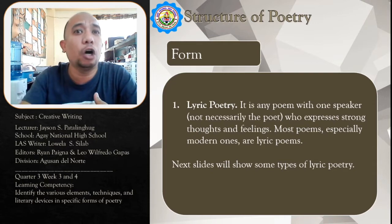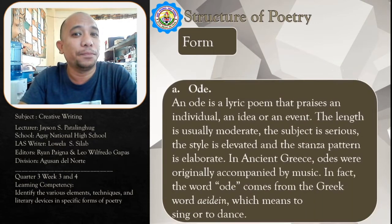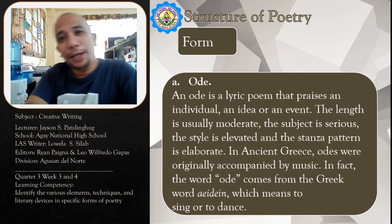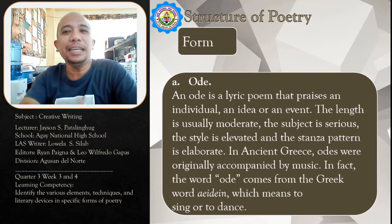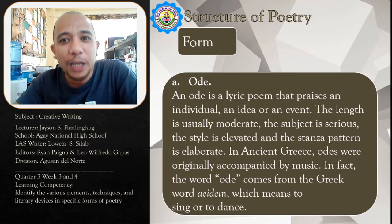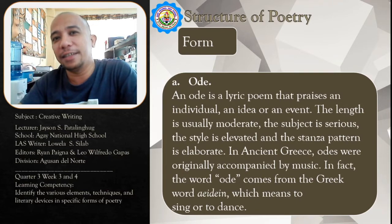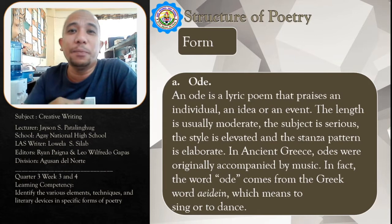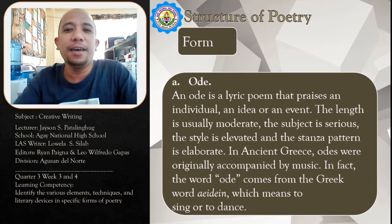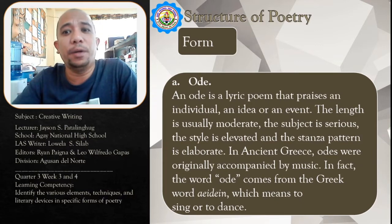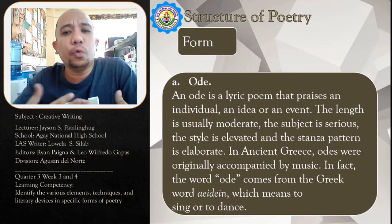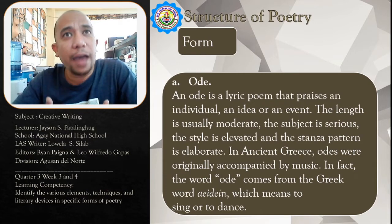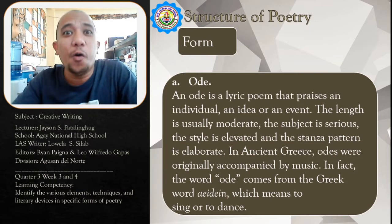The next slide will show some types of lyric poetry. The first type is the ode — a lyric poem that praises an individual, an idea, or an event. It exalts someone. The length is usually moderate, the subject is serious, the style is elevated and usually very formal, and the stanza pattern is elaborate. In ancient Greece, odes were originally accompanied by music. In fact, the word 'ode' comes from the Greek word 'aiden,' which means to sing or to dance.